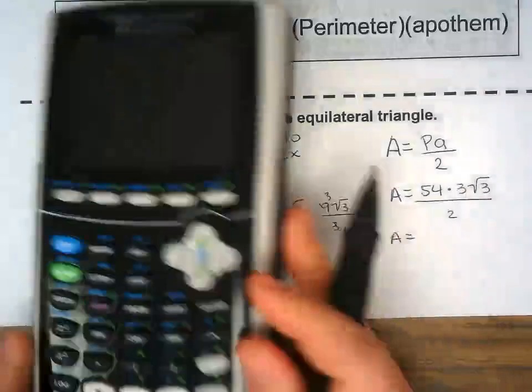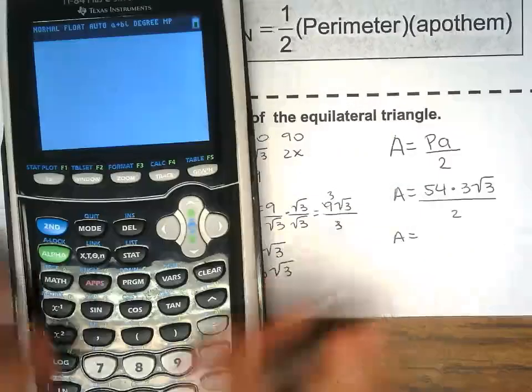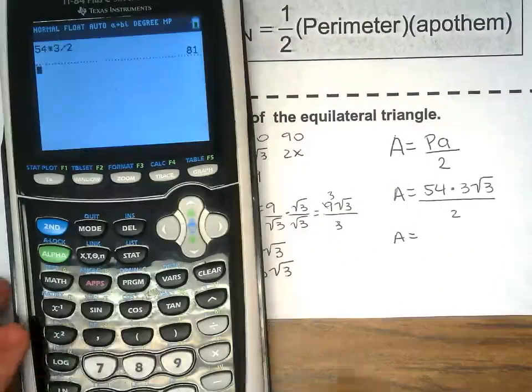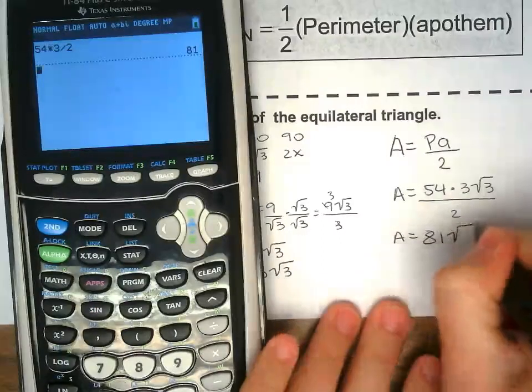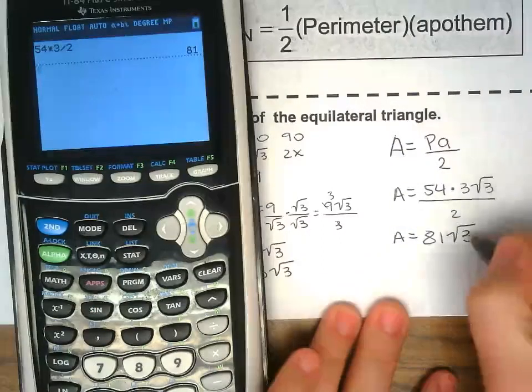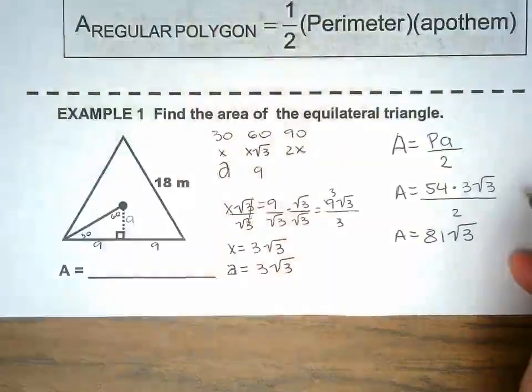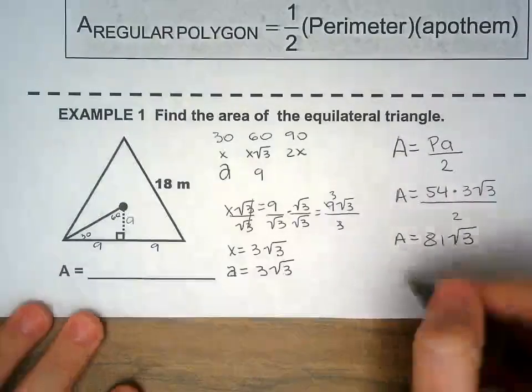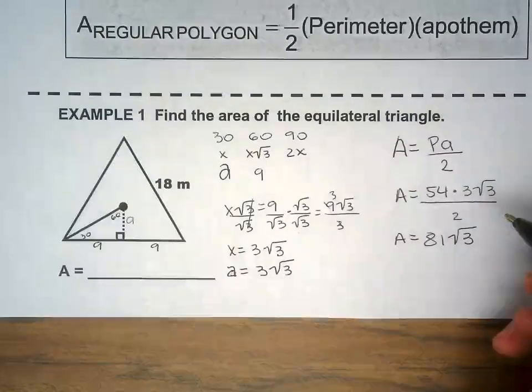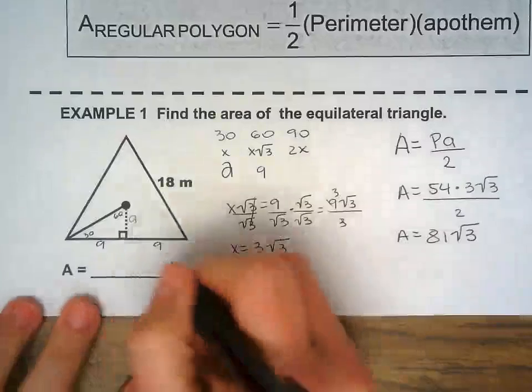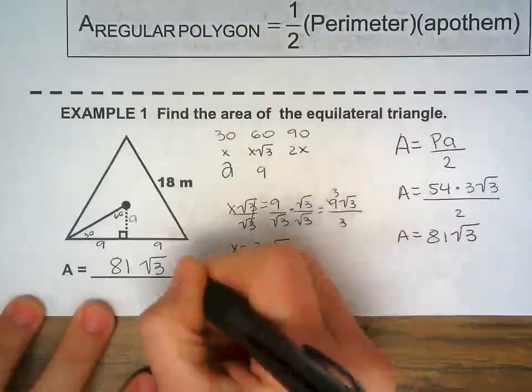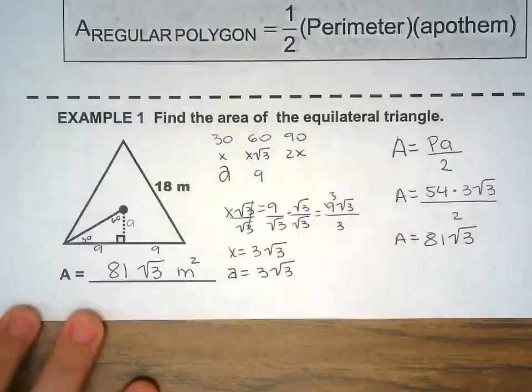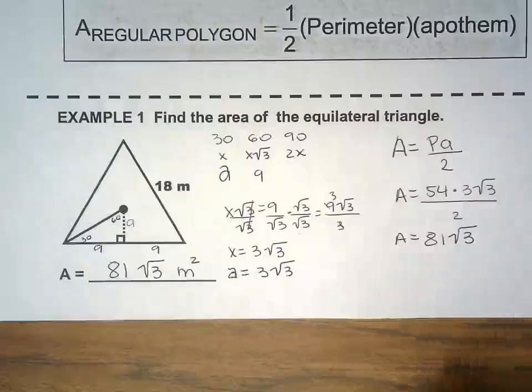Put this in the 54 times 3 divided by 2, 81 square root of 3. You do not put the square root of 3 in the calculator because you're gonna leave it in terms of square root of 3. Or you're gonna leave that in terms of square root. So area is 81 square root of 3 meters squared, because we're talking about area.